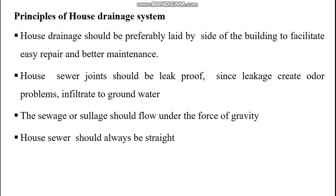Principles of house drainage system: house drainage should preferably be laid by the side of the building to facilitate easy repair and better maintenance. House sewer joints should be leak proof, since leakage creates odor problems and infiltrates to groundwater.